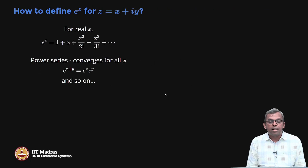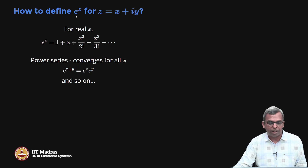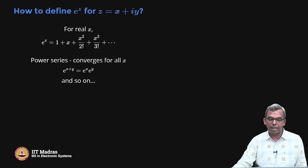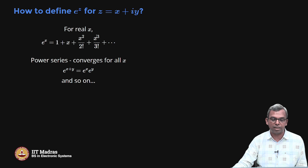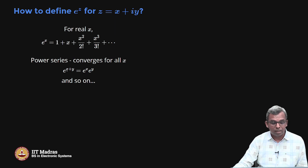So, how do we define e^z for z = x + iy? We know how to define e^x for real numbers. E^x is defined through the series 1 + x + x²/2! and so on. When you have x + iy, how do we extend it to e^z? One key property of real e^x is this multiplicative property: e^(x+y) = e^x · e^y.